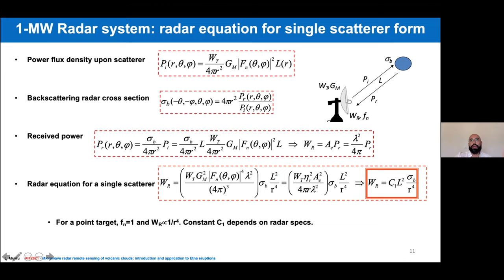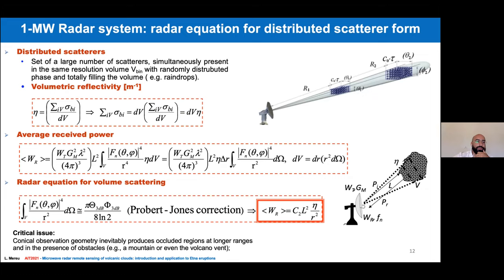When we talk about scanning with a radar, we talk about a distributed target — we may observe different targets within a volume. We then talk mainly about volumetric reflectivity, which is a weighted quantity related to the cross sections of targets in the elementary volume. This is the same relation as before, but now we observe the volumetric reflectivity, and we try to retrieve information about the dispersion of particles in this elementary volume.